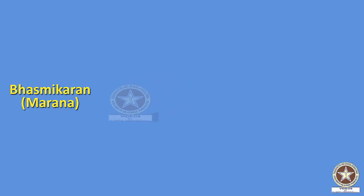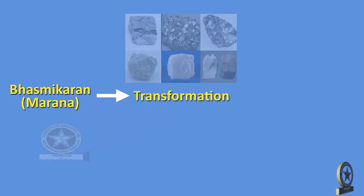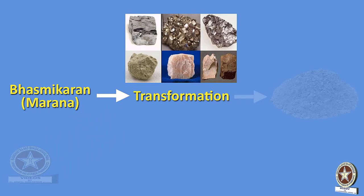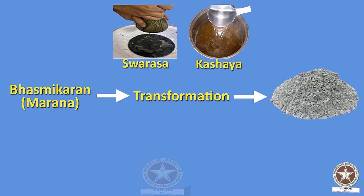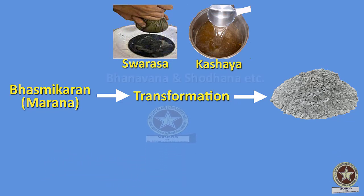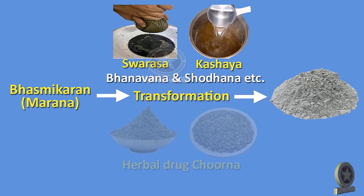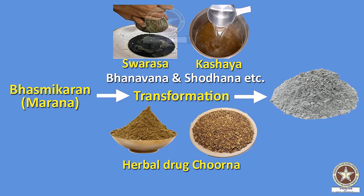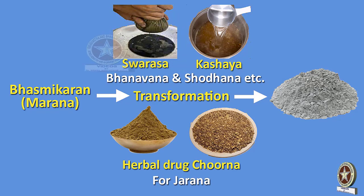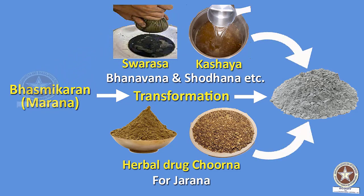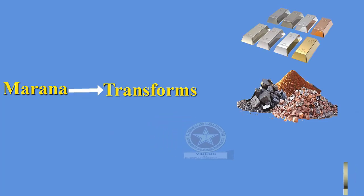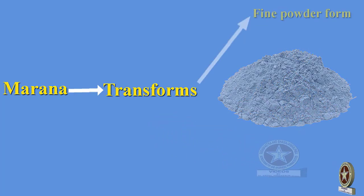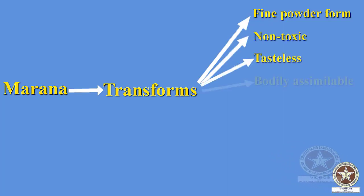Bhasmikarana is not mere transformation of metals or minerals into fine powder form of medicine. During the procedure, various herbal medicines are used — such as Swarasa and Kashaya for Bhavana and Shodhana, and herbal drug Churna used in Jharana. It is believed that the properties of those herbal drugs will be present in the final product, that is, the Bhasma.